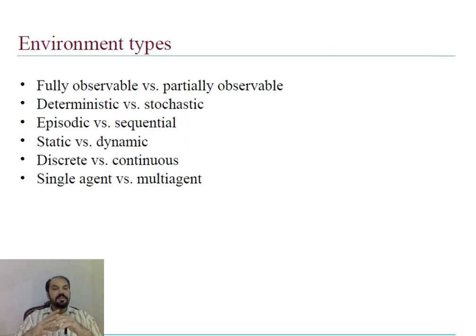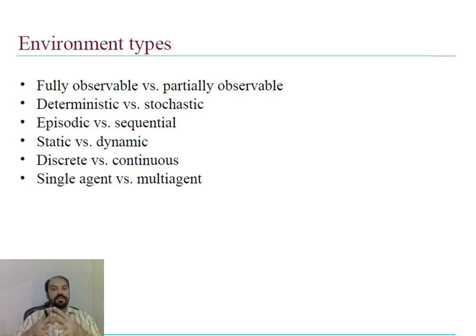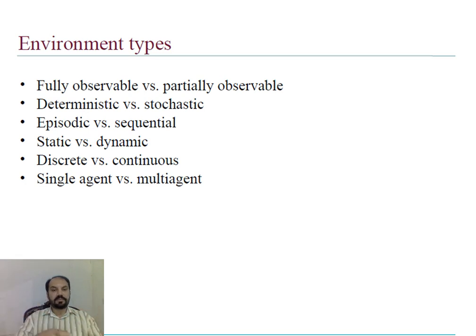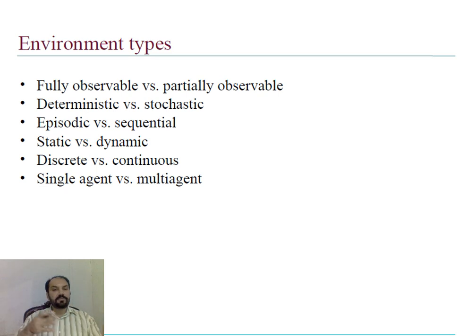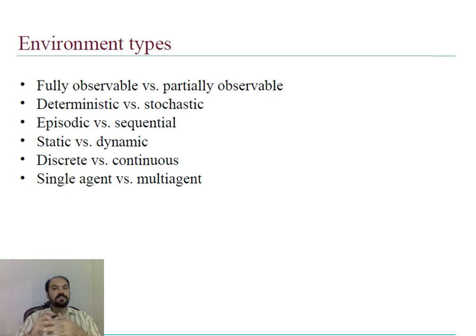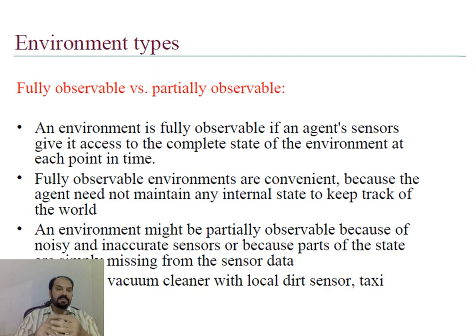Now let's look at different environment types. Agents which can operate in an environment can be: fully observable, partially observable, deterministic, stochastic, episodic, sequential, static, dynamic, discrete, continuous, and single versus multi-agent. Let's discuss one by one.